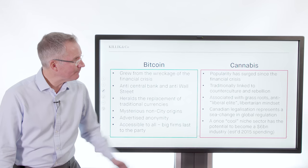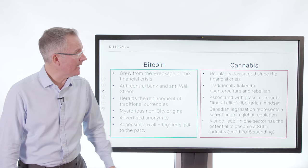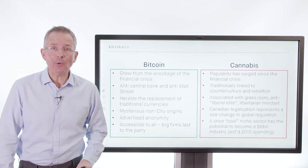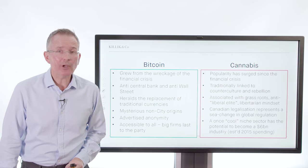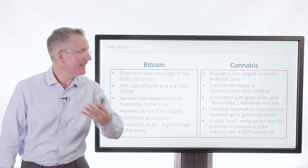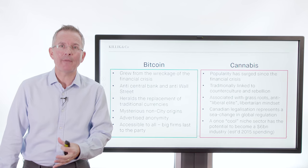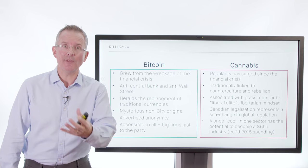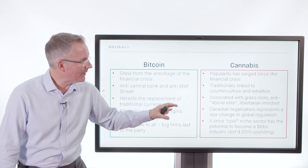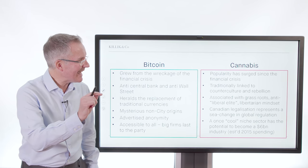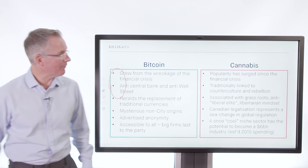With cannabis, what's the story? The story is age-old, really. Its popularity has surged since the financial crisis. Traditionally it is linked to counterculture and rebellion — a little bit off-piece, a little bit left-field — because it's banned in most countries around the world in terms of selling it over the counter. It's associated, therefore, with grassroots, anti-libertarian mindsets, so it plays into some of the same themes as Bitcoin.